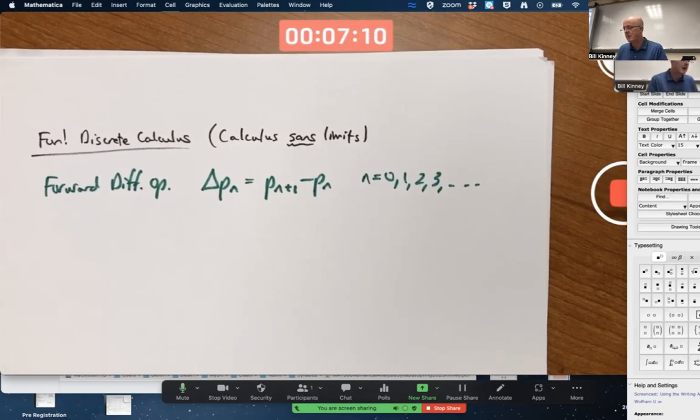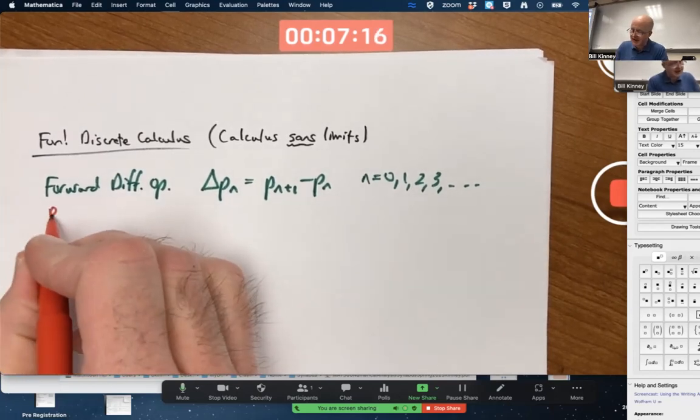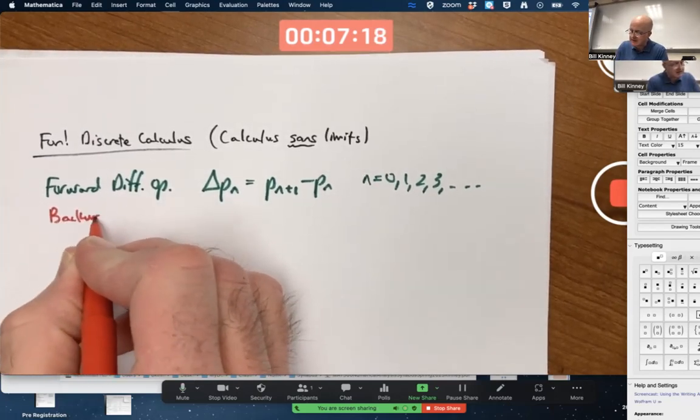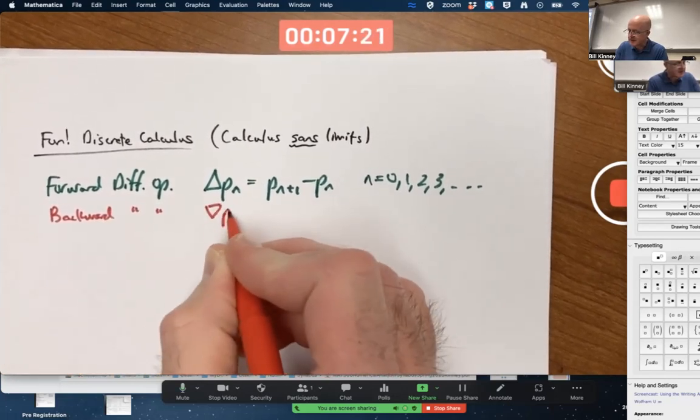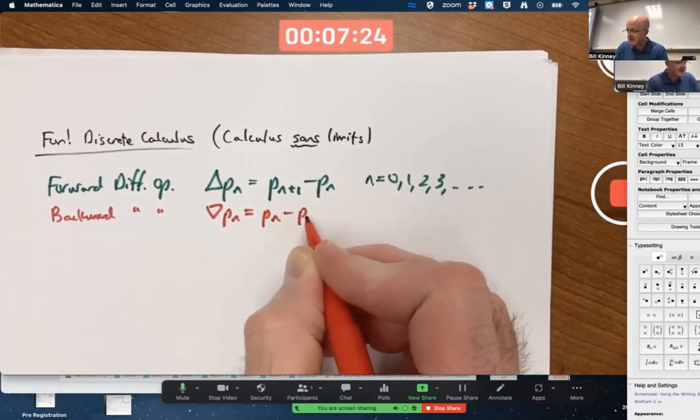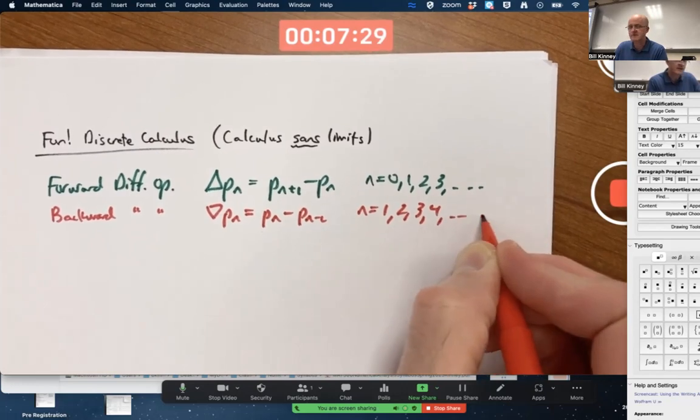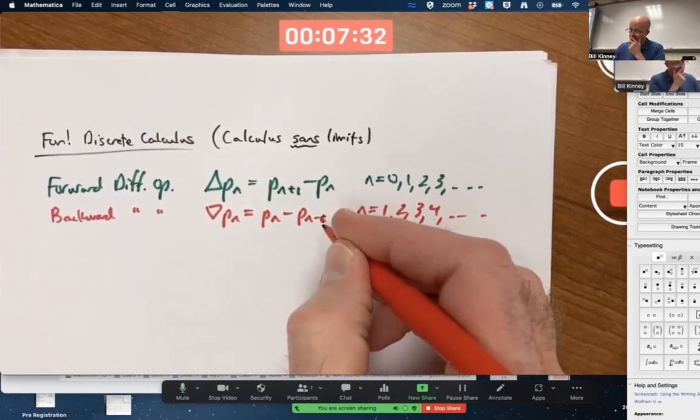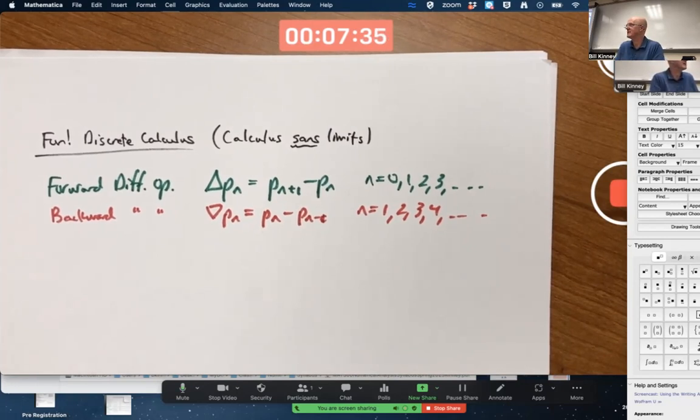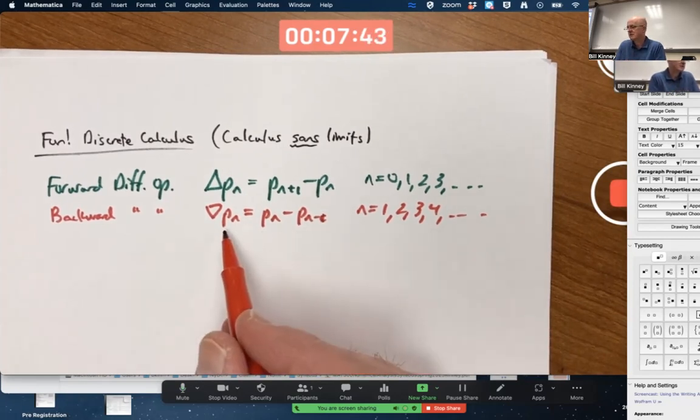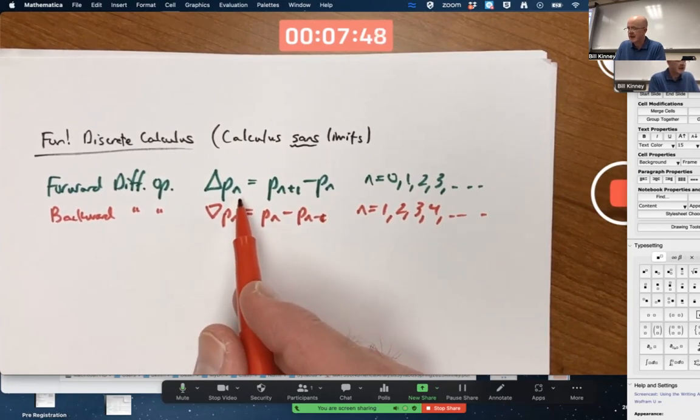And with the backwards difference operator, NABLA of P_N, it's technically a different formula and you technically use it for different values of N starting with 1 instead of 0. But because you're doing differences of successive values in the sequence, it's really the same sequence, just reordered with the first element of the sequence being a subscript of 0 in the first case and 1 in the second case.